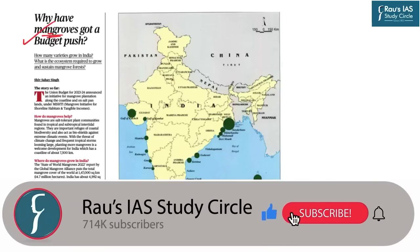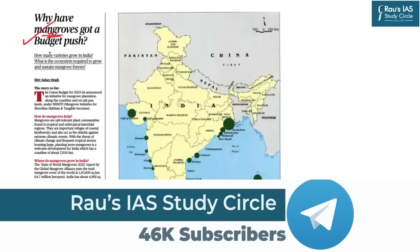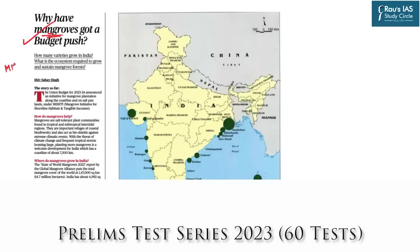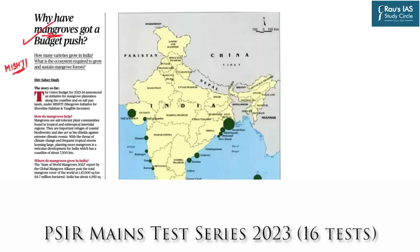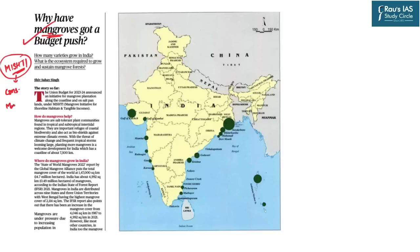This topic deals with mangroves, which has appeared in today's The Hindu in relation to the Union Budget 2023-24. In the previous DNS we discussed the MISTHI scheme — Mangroves Initiative for Shoreline Habitats and Tangible Incomes — whose main aim is preservation and conservation of mangroves. Today we deal with the overall topic of mangroves, primarily relevant for GS Paper 3 under environment and biodiversity.